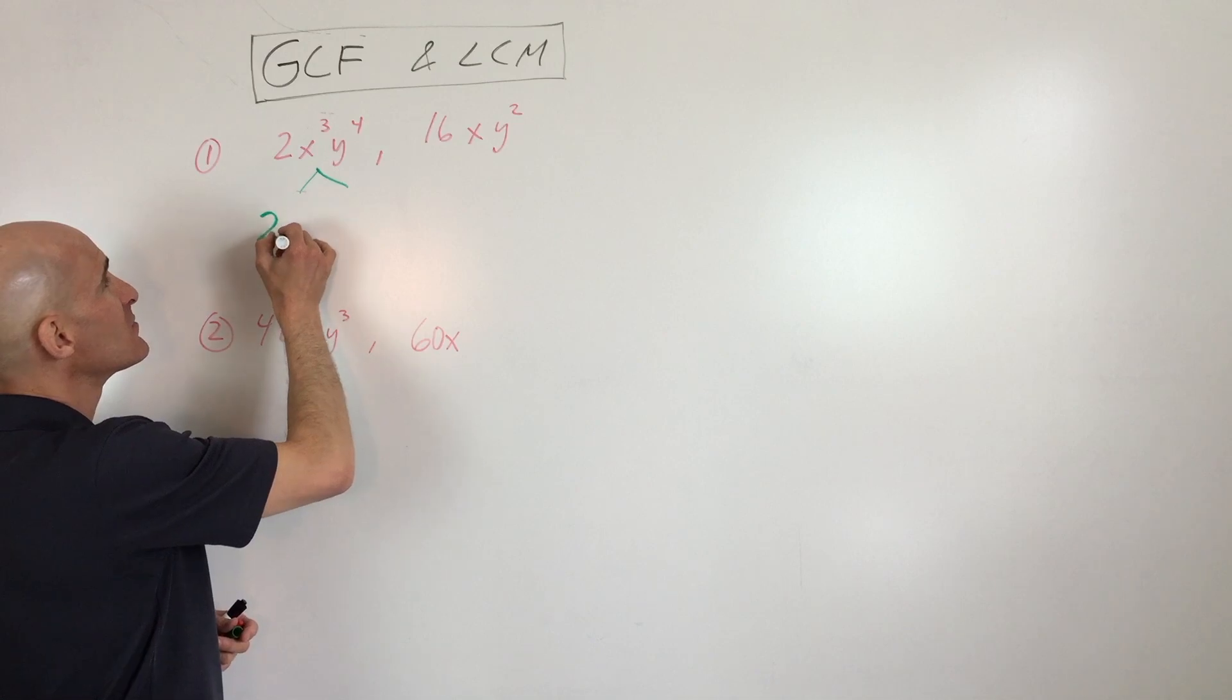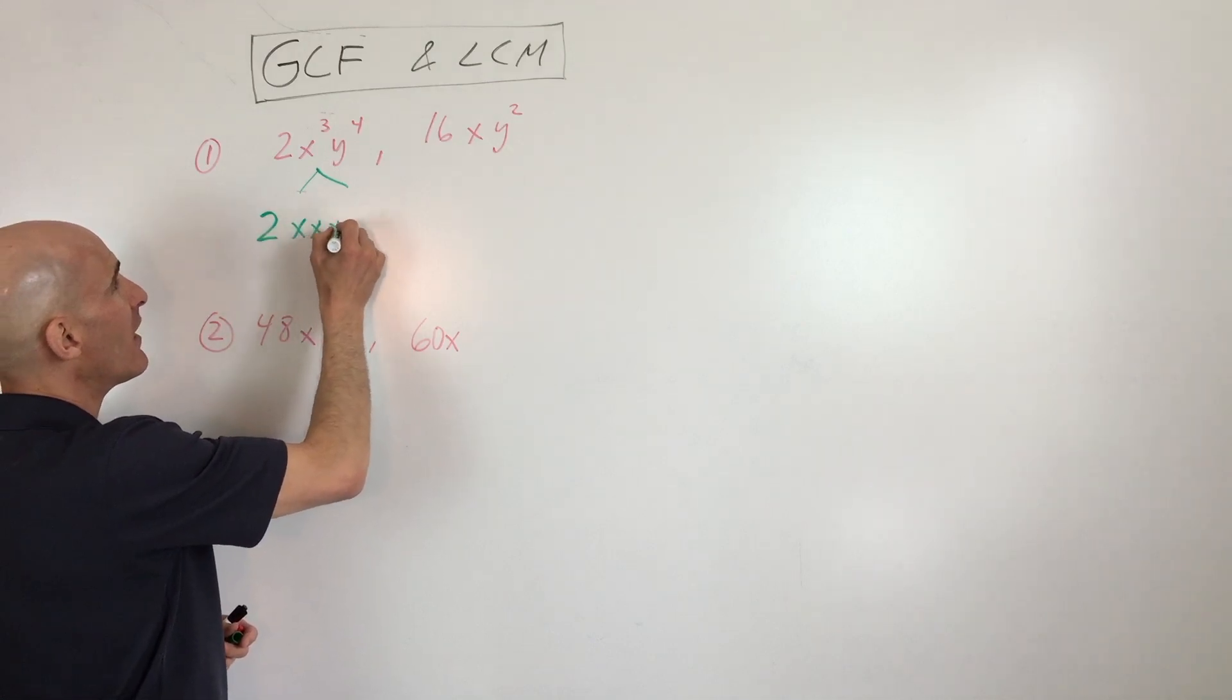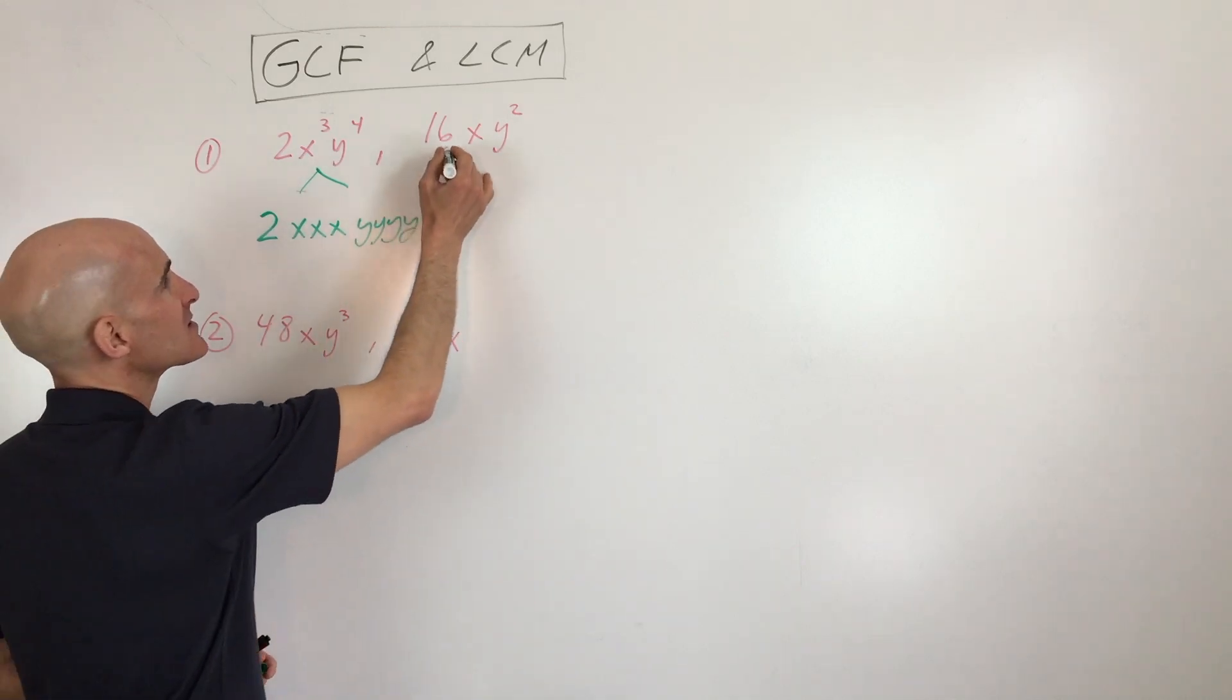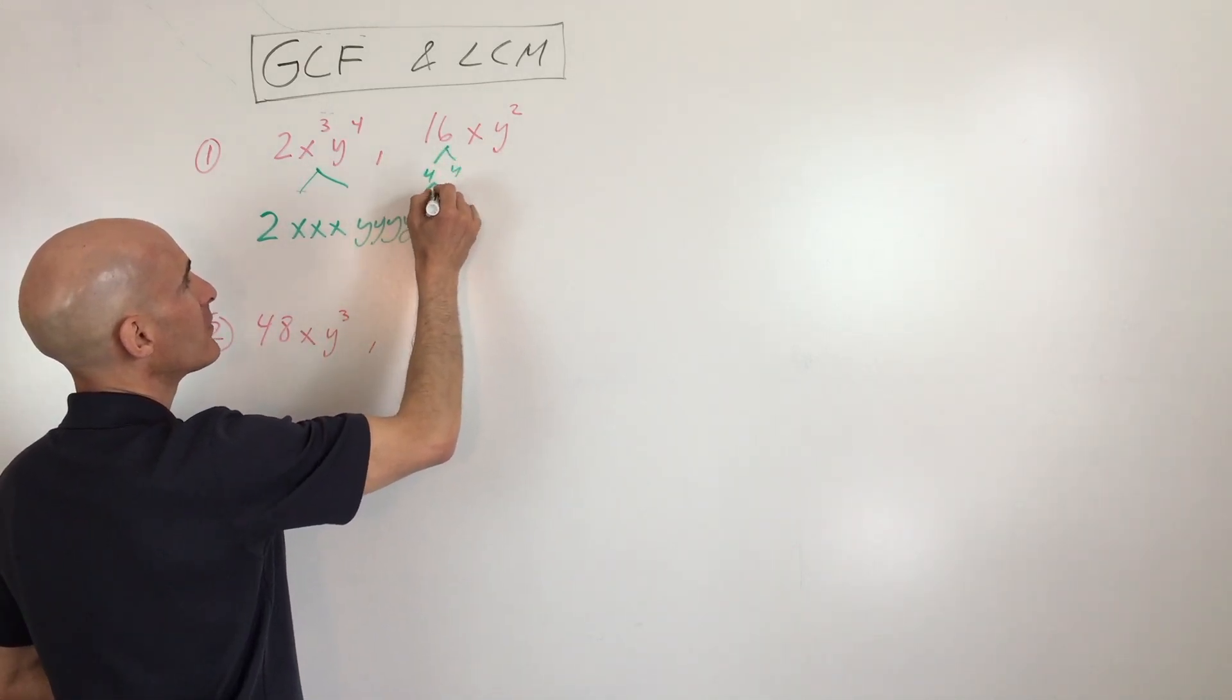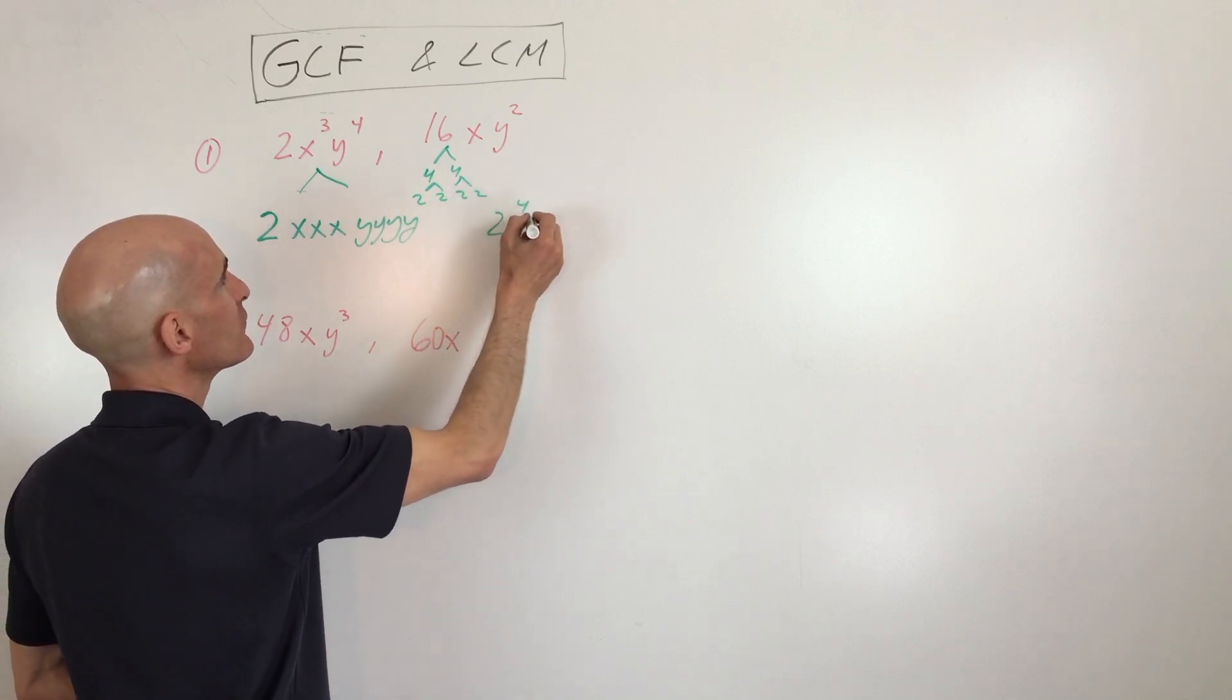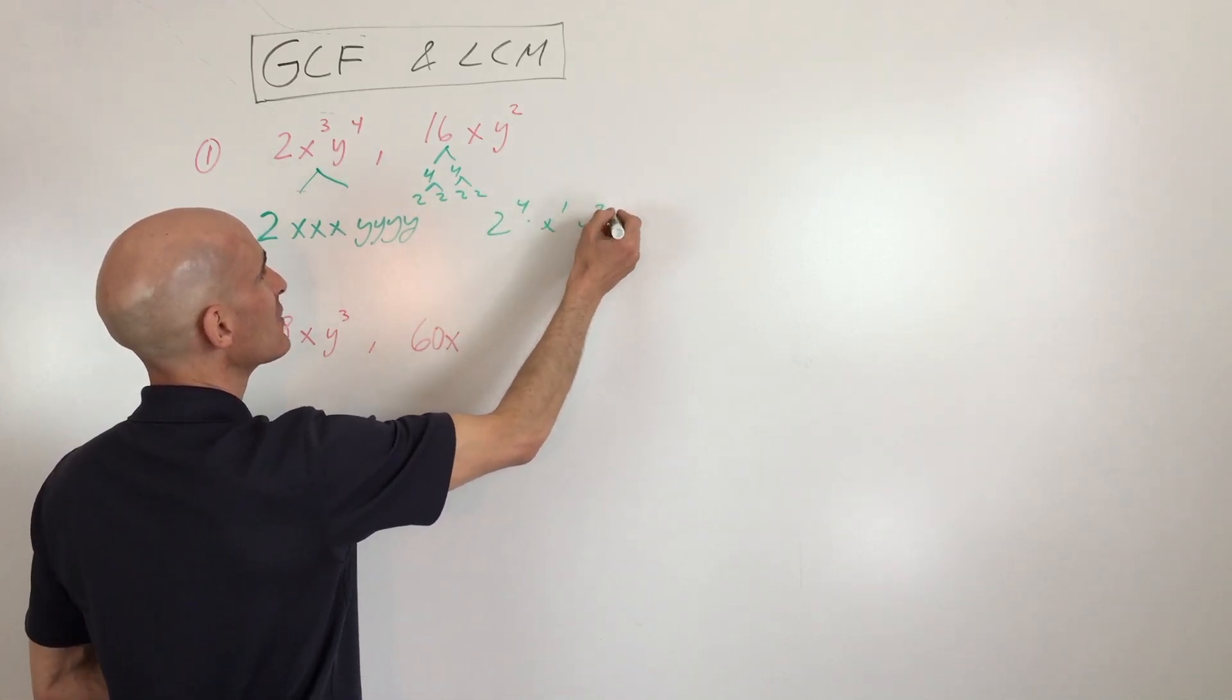So we can see that this is going to be 2x³y⁴, right? 16 is going to be 4 times 4, which can be broken down to 4 twos, which is 2⁴, x¹, y².